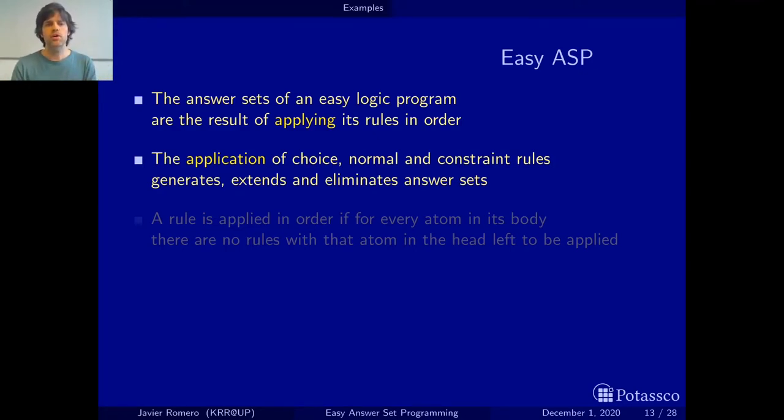So whenever the condition of a rule holds, if it's a choice rule, it may generate new answer sets. If it's a normal rule, what we are doing then is we may add new elements to that answer set. And if the condition holds and it's a constraint rule, what we are doing is we are deleting, eliminating that answer set.